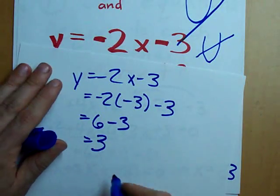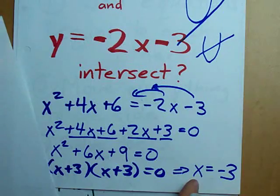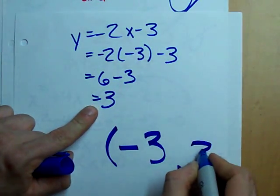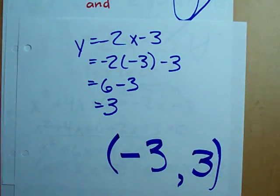So, these two parabolas intersect at minus 3. That's the x value. And positive 3. That's the y that I just solved for. And that's it.